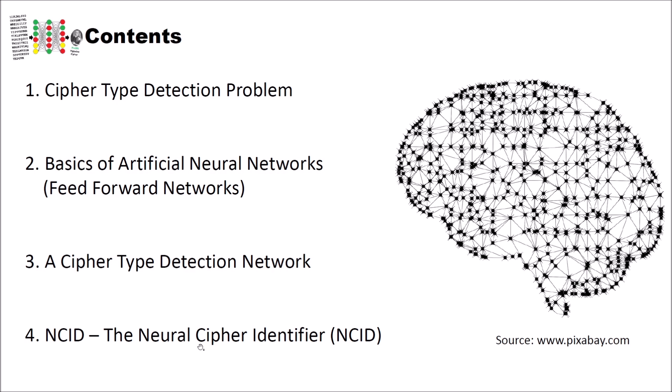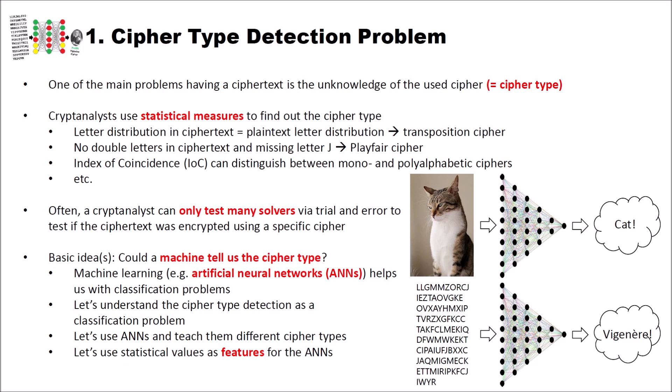The cipher type detection problem: one of the main problems with a ciphertext is not knowing which cipher was used — what we call the cipher type. Cryptanalysts use statistical measures to find this out. For instance, you can check if the letter distribution in the ciphertext equals the plaintext letter distribution, which may indicate a transposition cipher. Having no double letters and a missing letter J could point to a Playfair cipher. And the index of coincidence (IOC) can distinguish between mono- and polyalphabetic ciphers.